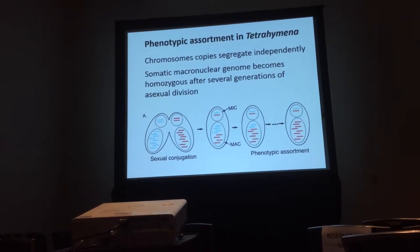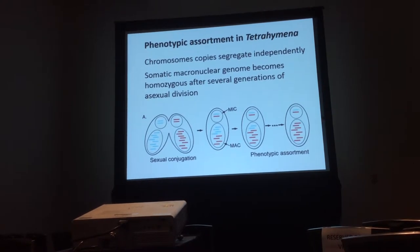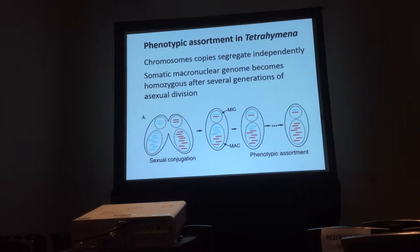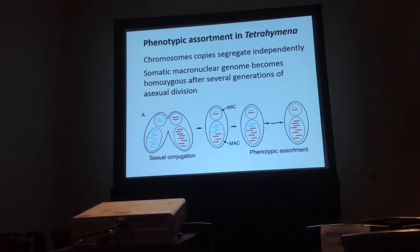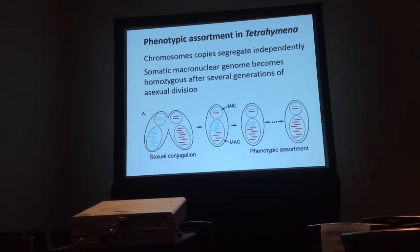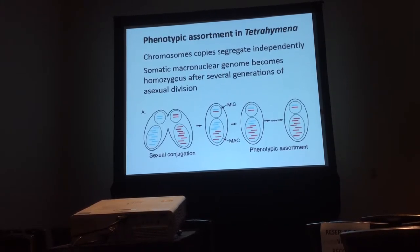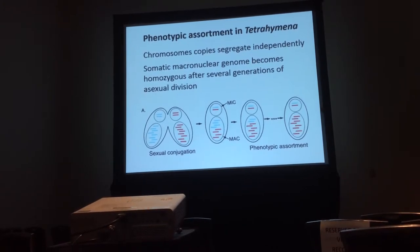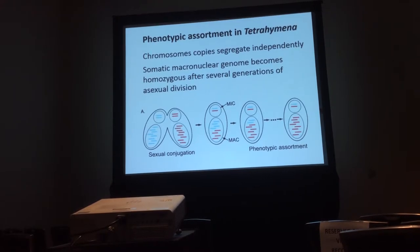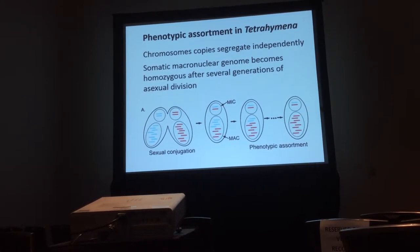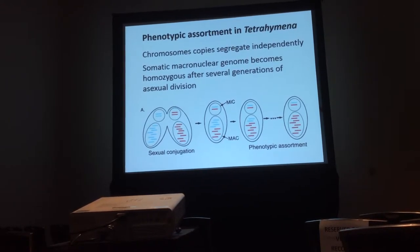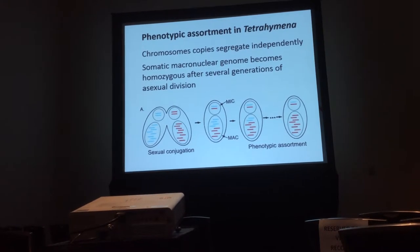Another unusual thing that Tetrahymena does is phenotypic assortment. Unlike normal cell division, during mitosis the chromosomes don't align normally — they just copy and then segregate independently. So in the instance of an individual that has a heterozygous micronucleus with two alleles, it will generate a new macronucleus having copies of either of those two alleles. Over time, since they segregate independently, the cells will become homozygous for either one allele or another. This would suggest that any recessive alleles would be fully exposed to selection over time in the somatic nucleus, even though the micronucleus still remains heterozygous for both.